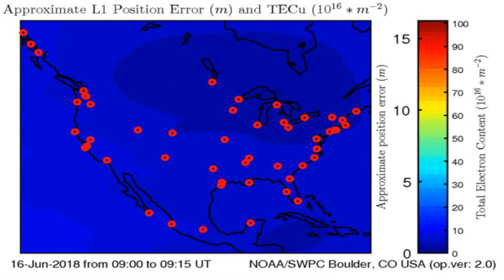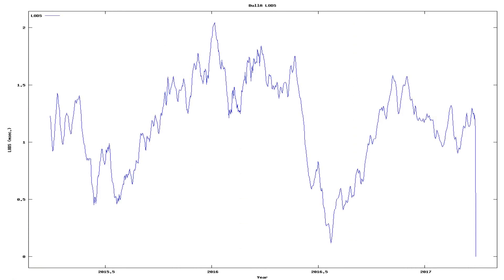And here we see the total electron content above the Earth. Anomalies in total electron content have sometimes preceded earthquakes below that area on Earth.